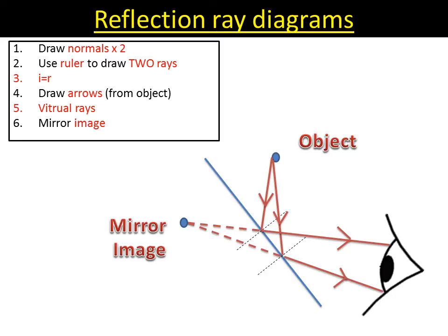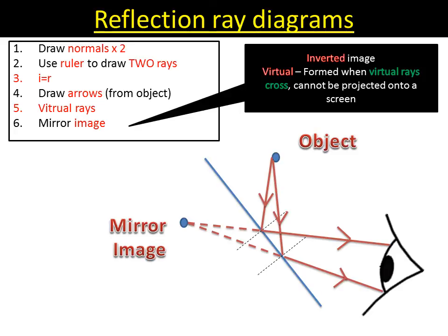You might be asked to describe the image as well. It is inverted, which means it's flipped. So if you look in the rearview mirror and ambulance, the lettering is flipped on the bonnet so you can read it. It's a virtual image, which means it's formed where virtual rays cross and it cannot be projected onto a screen. You cannot hold a mirror up to your face and try and project that image of your face onto a wall.